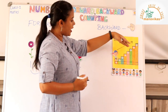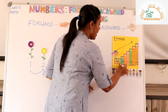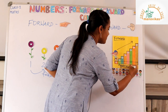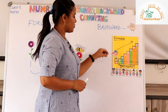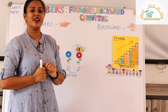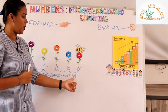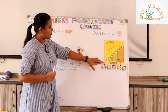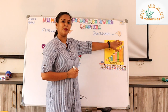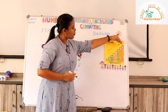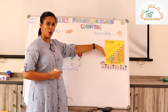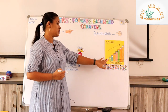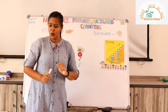Moving from step number 1 to step number 8 is called forward counting — from a smaller number to a bigger number. And when he came back down from step number 8 to step number 1 — from a bigger number to a smaller number — it is called backward counting. So in this example we saw both forward counting and backward counting.